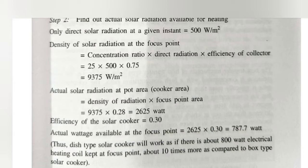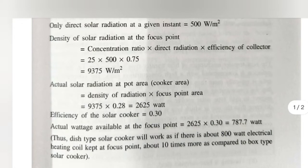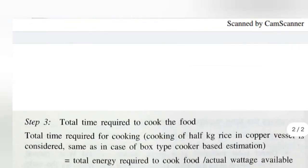The effective solar radiation at the focus point — that is, the actual solar radiation at the pot area multiplied by the efficiency of the solar cooker — comes to 787.7 watts. Thus, the parabolic solar dish will work as if there is about an 800-watt electrical heating coil kept at the focus point, which is about 10 minutes more as compared to the box solar cooker.